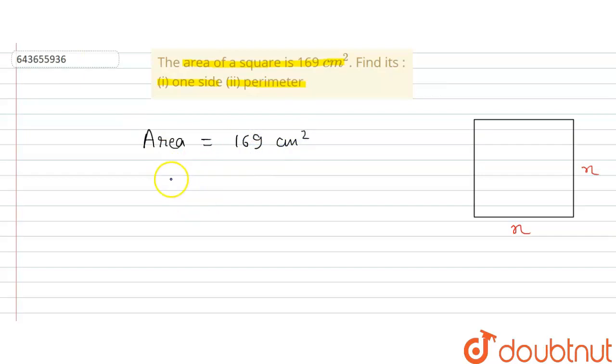We put the value of area. Area is equal to x square is equal to 169 centimeter square. So here we can say that x is equal to 13 centimeter. This is the side of the square.